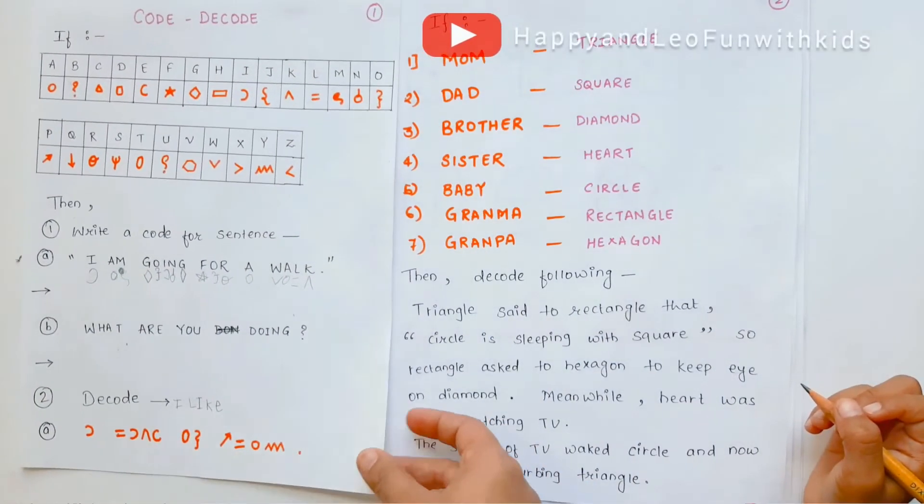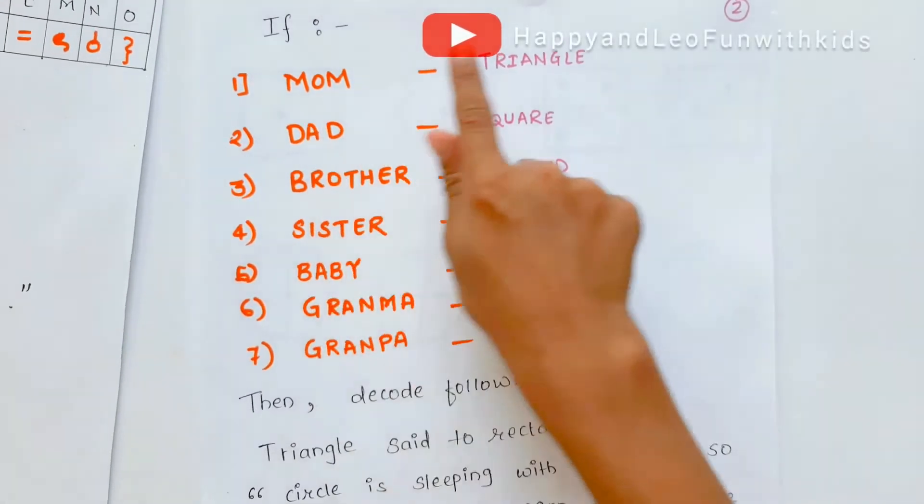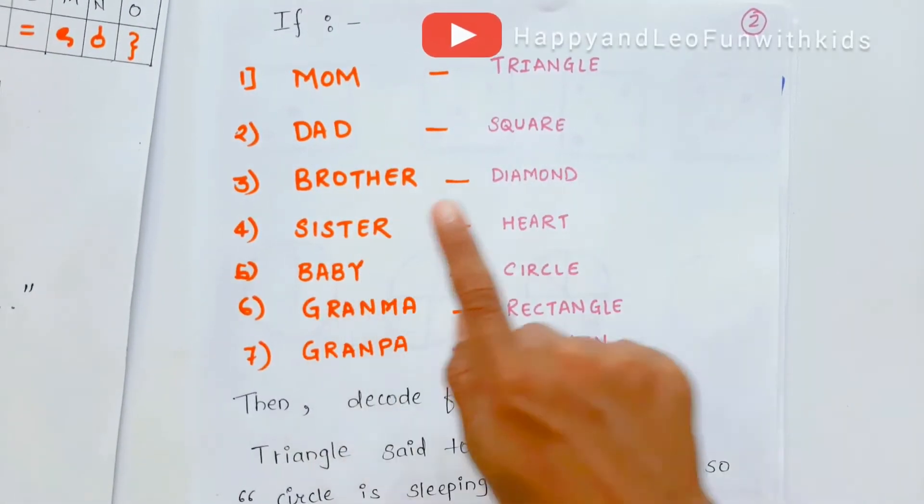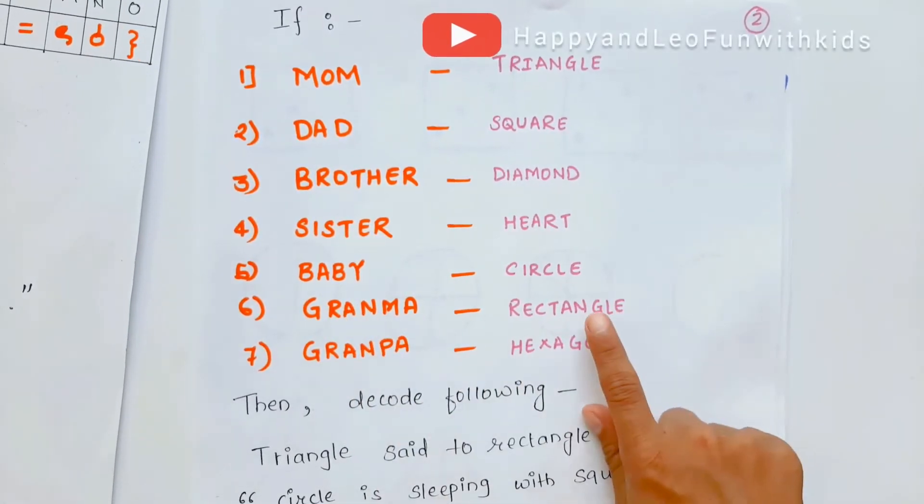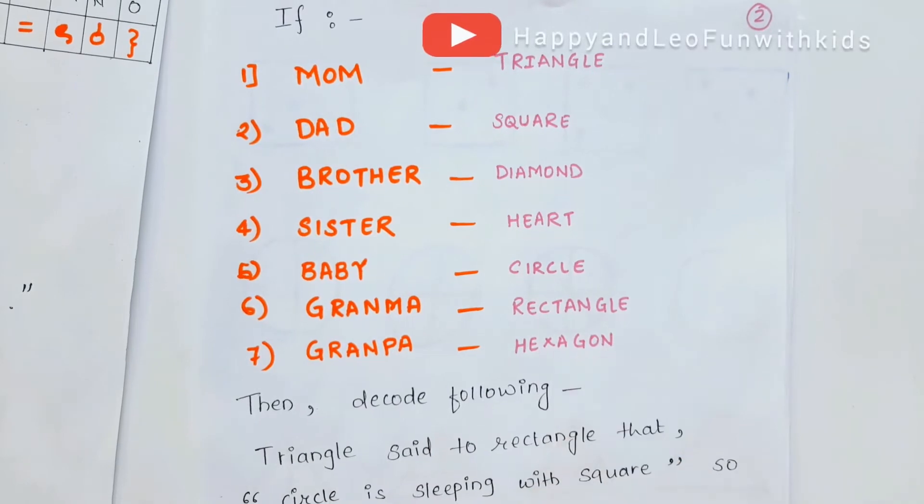Now, next worksheet. Let's read these first. Mom is triangle. Dad is square. Brother is diamond. Sister is heart. Baby is circle. Grandma is rectangle. Grandpa is hexagon.